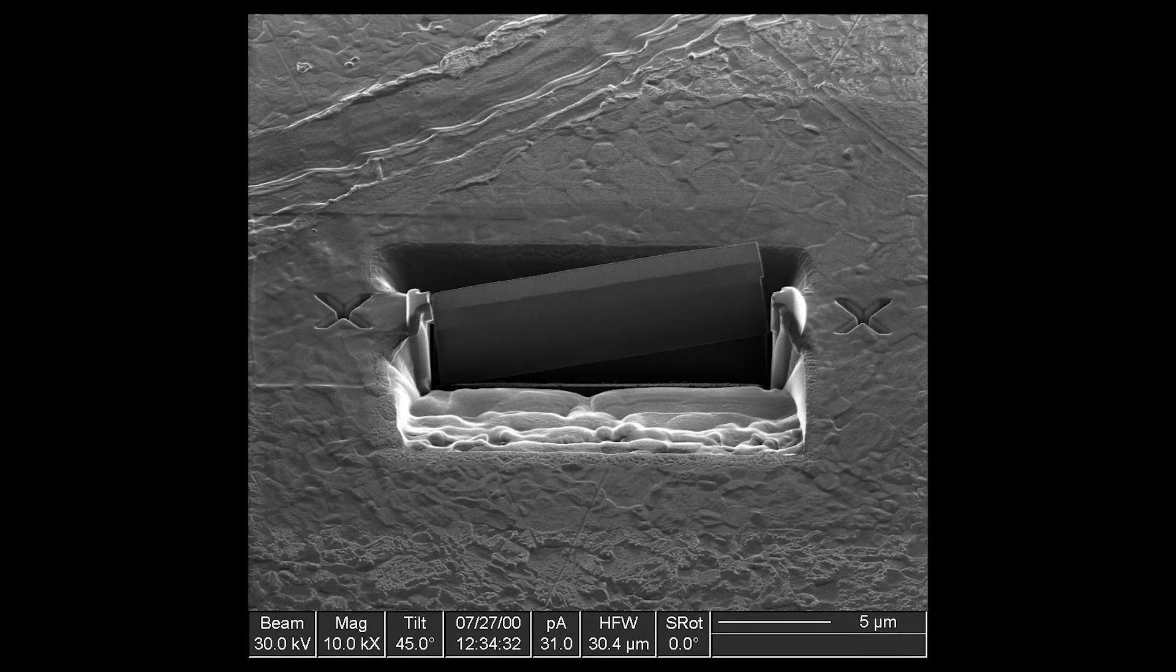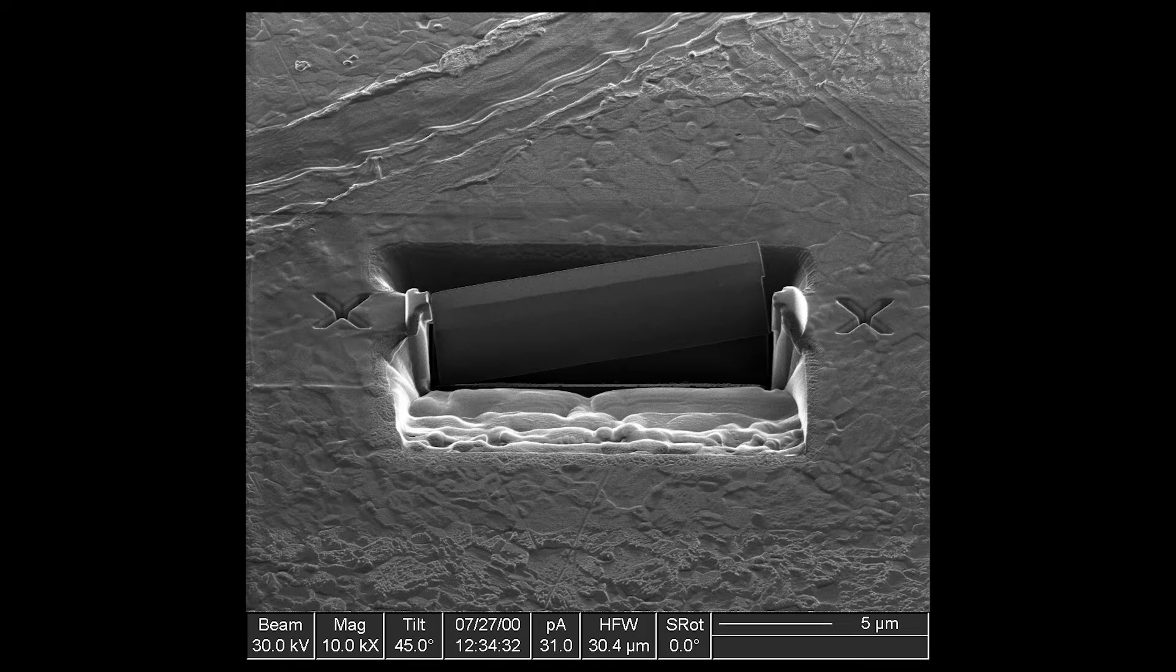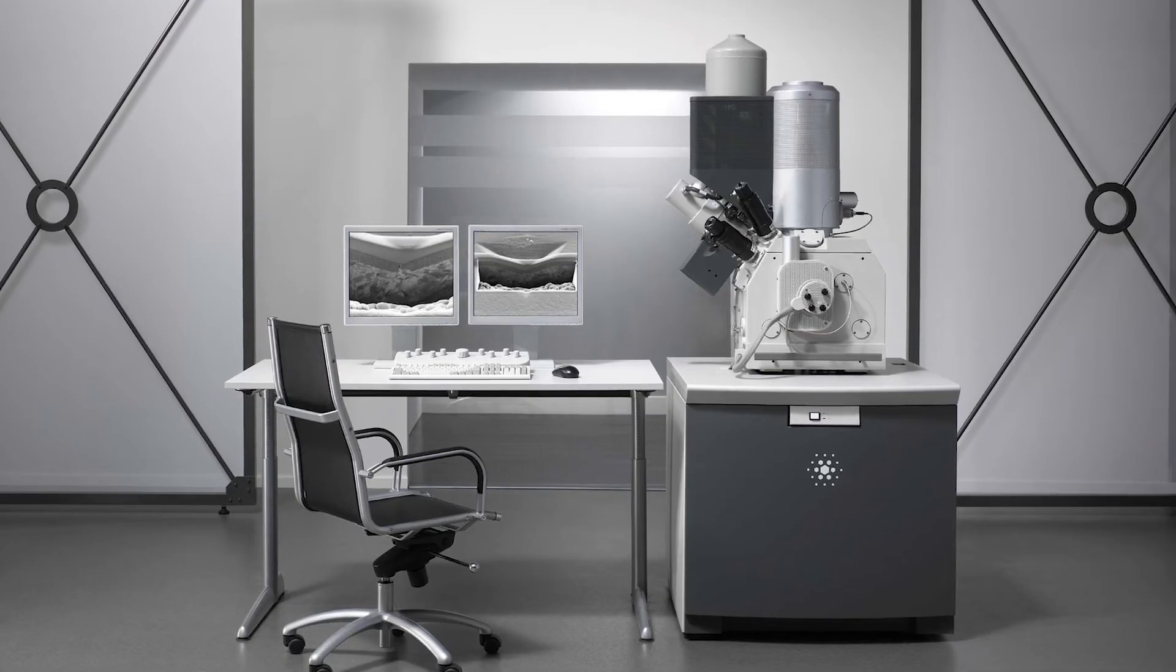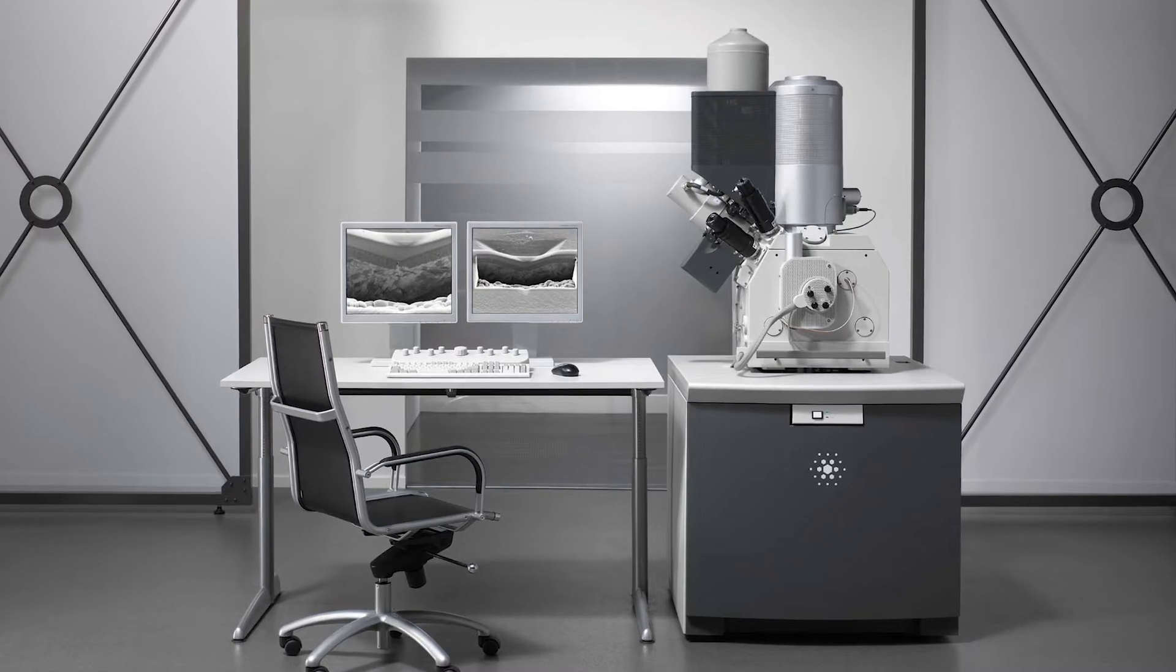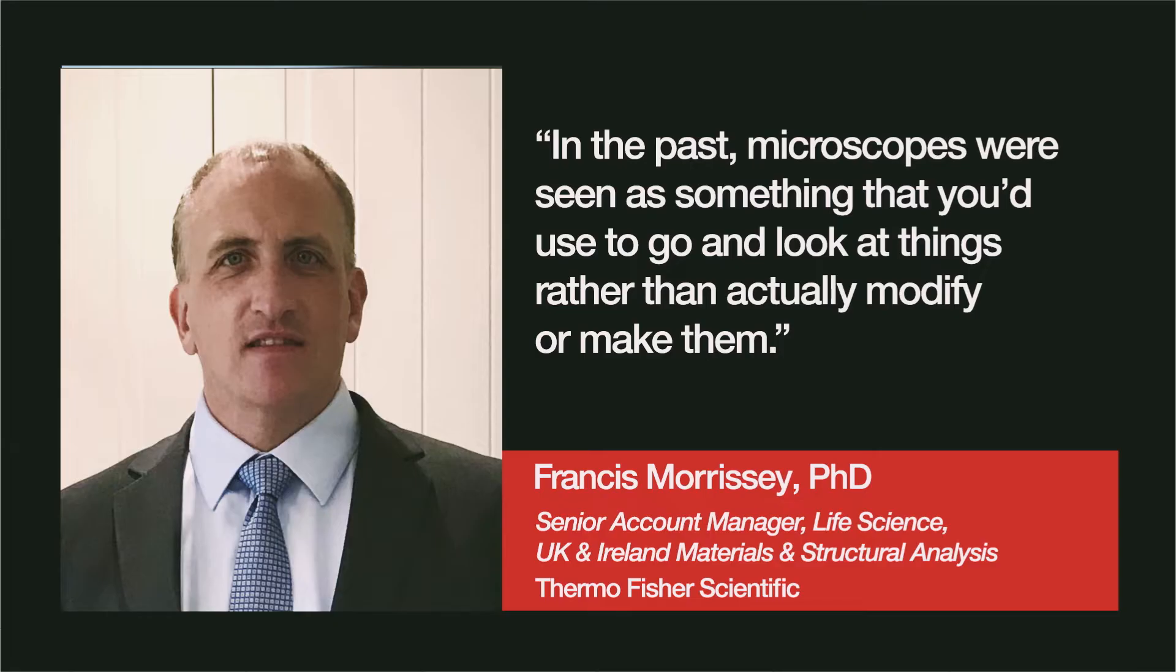As Dr. Wirth found, there was no other way for him to actually get these very small diamond inclusions within the TEM foil that he could go and study. And so then he could justify getting those funds from his scientific body to actually go ahead and purchase a microscope to do this. Whereas in the past, microscopes were seen as something that you'd use as a tool to go and look at things rather than actually modify or make them.